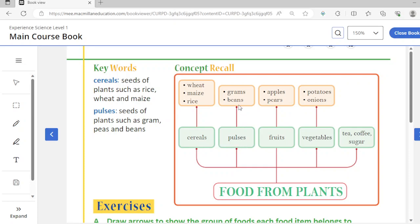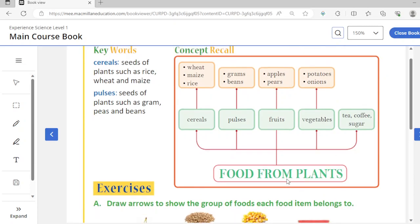In pulses we have beans, grams - these are examples of pulses. Fruits examples are apples, pears, and many more fruits you can add. Vegetables like potatoes, onions, tea, coffee, sugar - all these we get from plants.